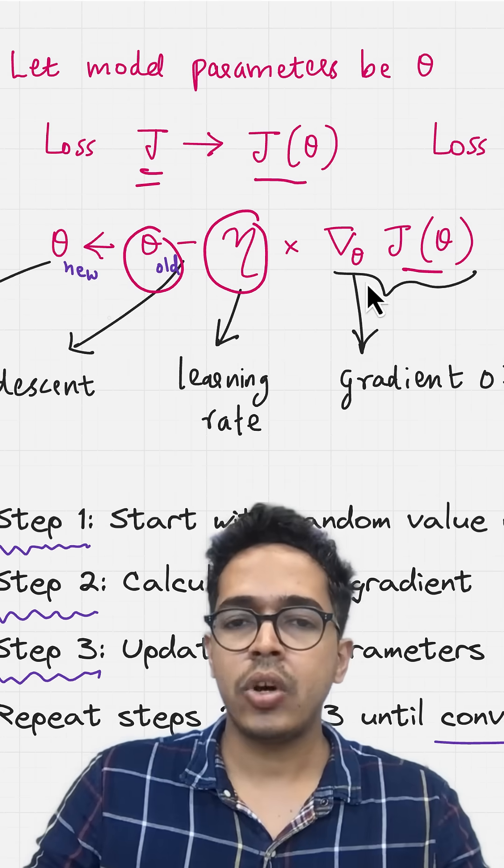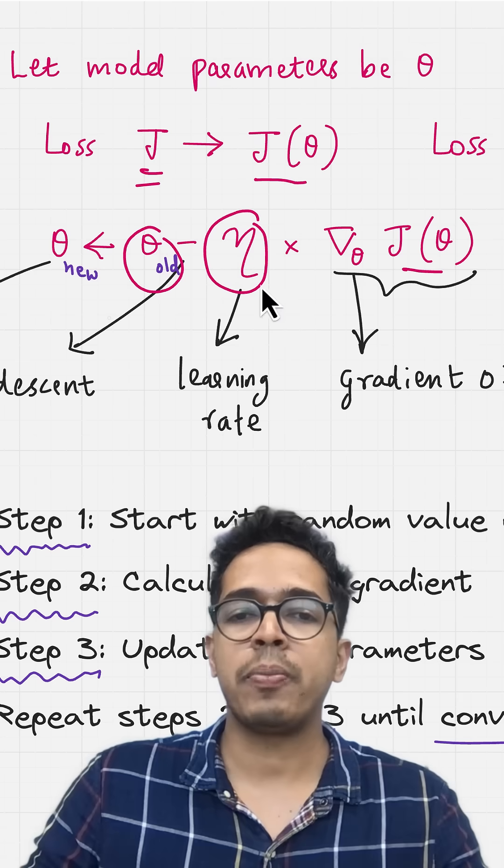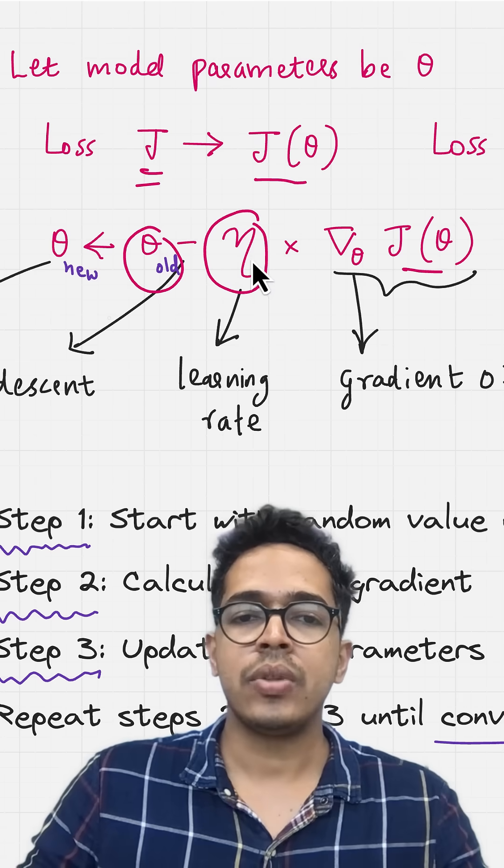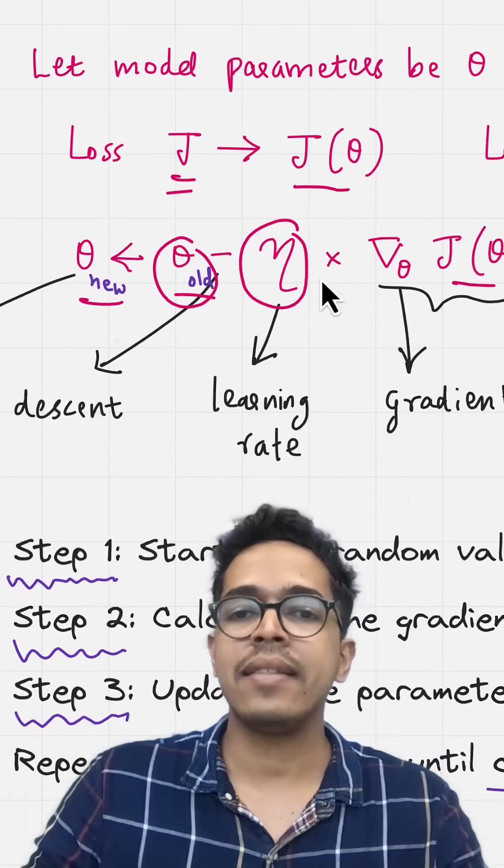You calculate the gradient of the loss and move in the opposite direction with a step proportional to the learning rate. The new values of theta equal the old value of theta minus the product of learning rate and the gradient.